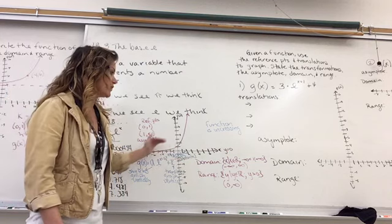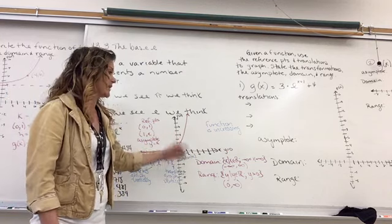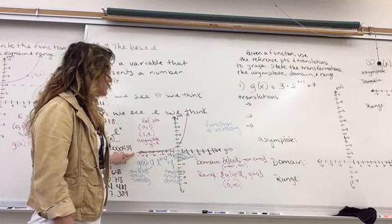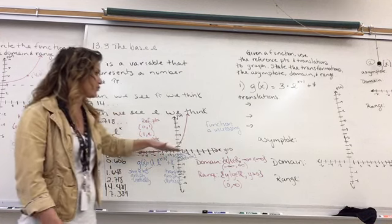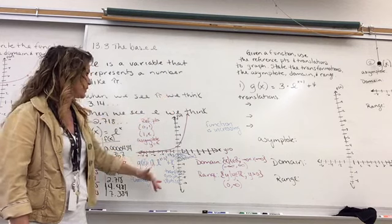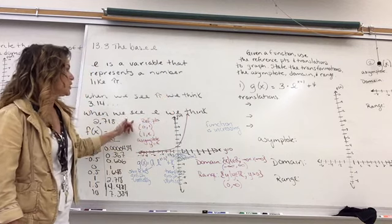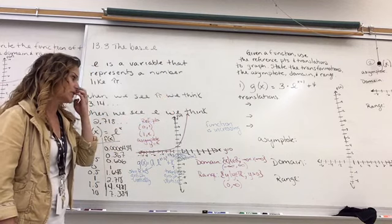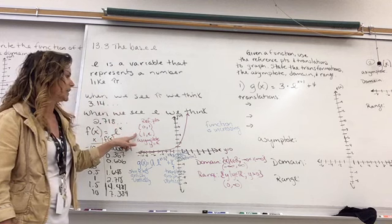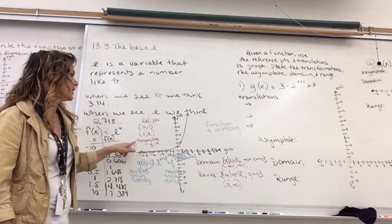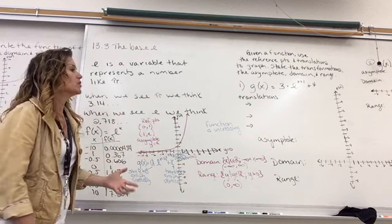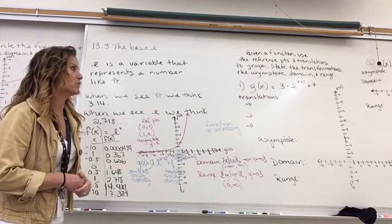Domain — the x values are all real, it goes left to right. Your range, because we have an asymptote here at y equals 0, our range is greater than 0. It doesn't go below. So our reference points that we'll use for our translations are 0, 1 and 1 comma e. The asymptote is y equals k, so whatever our k value is.